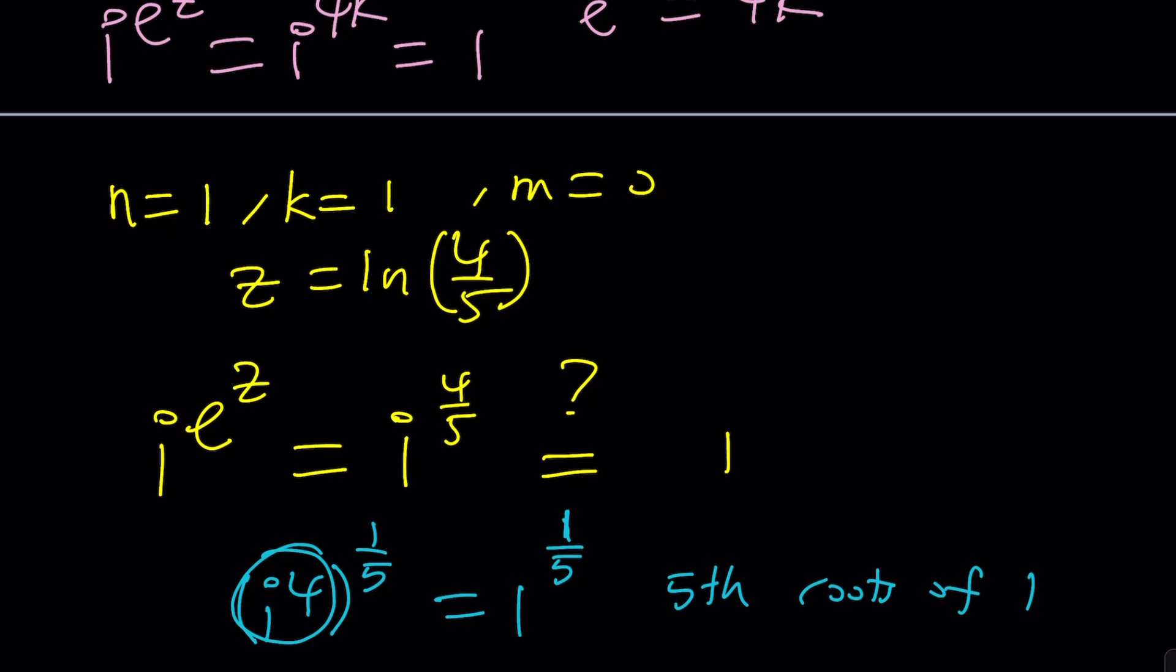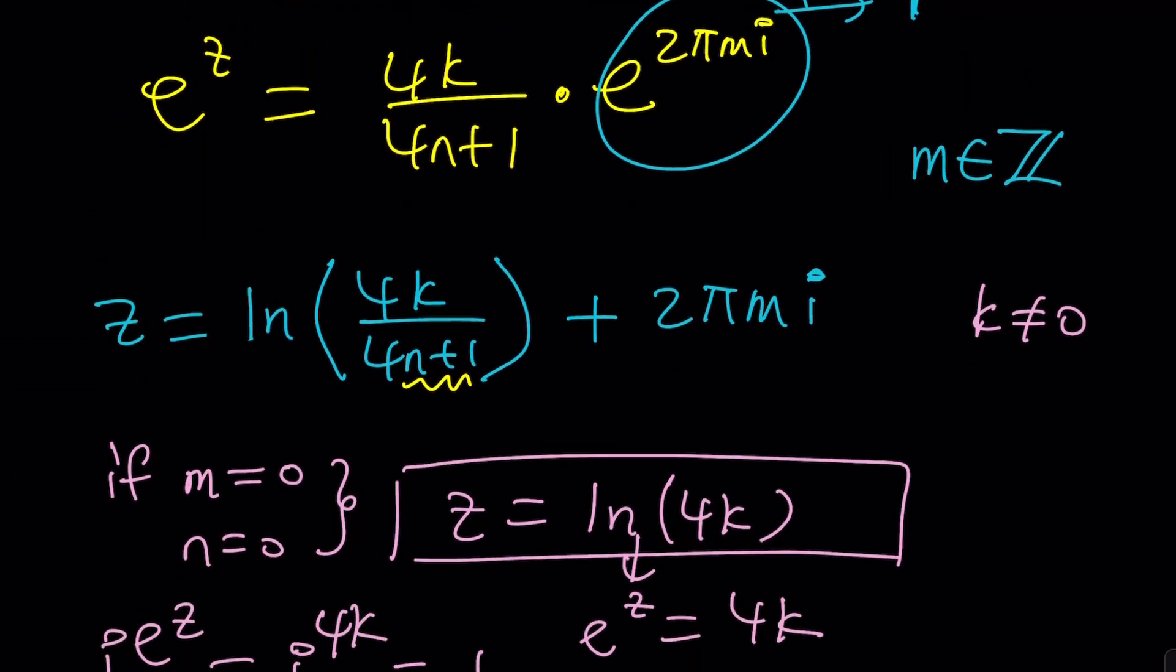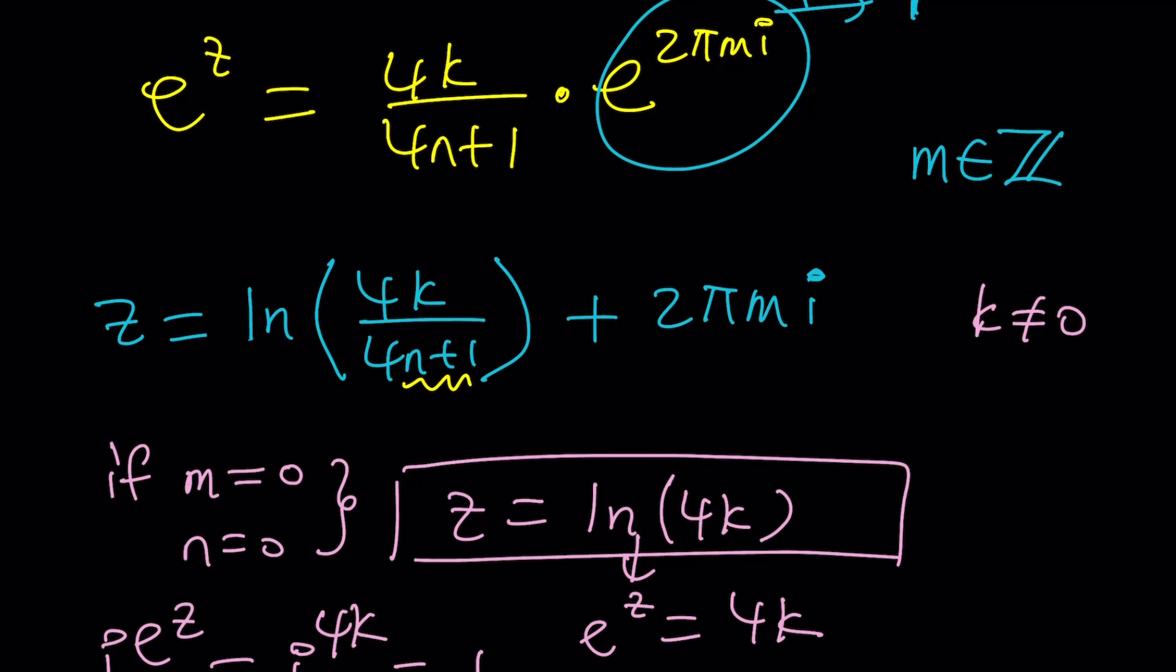What are your thoughts on if this is the general solution, or should we eliminate n from this equation? Please let us know in the comment section down below.